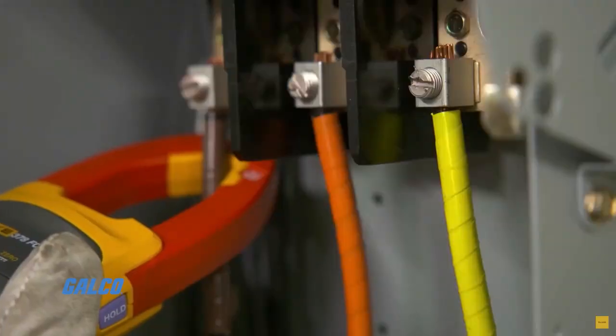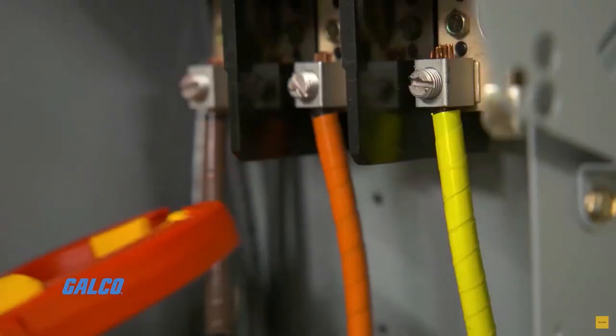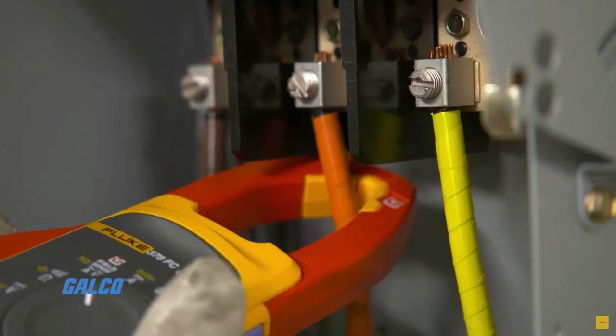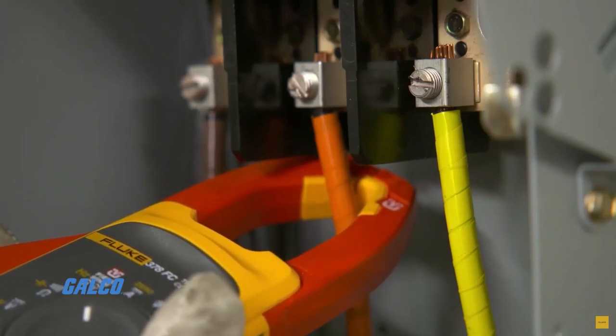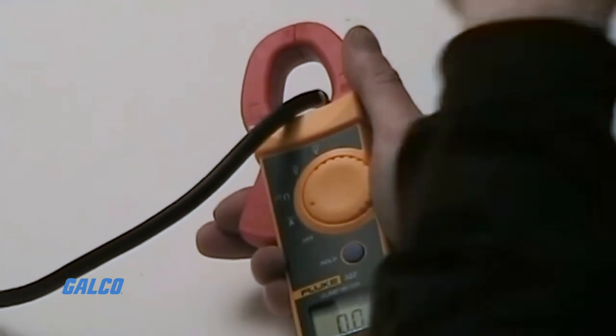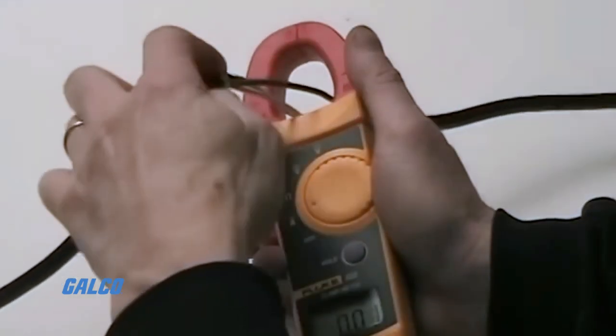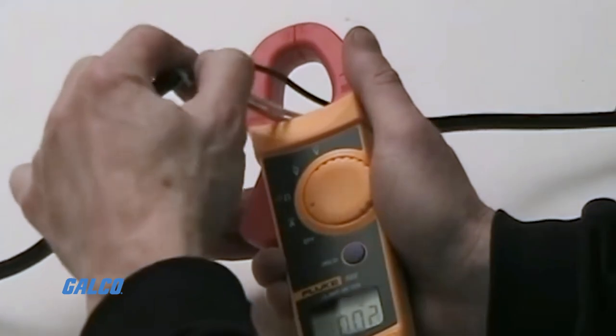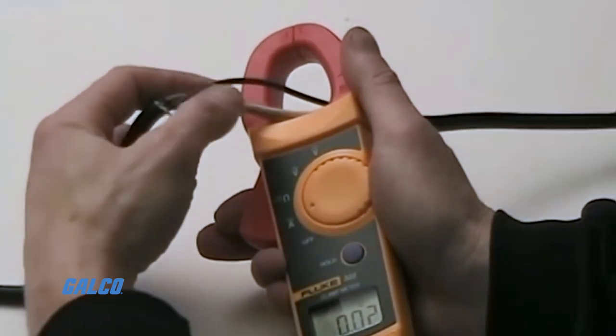It is also important to make sure that you are getting a proper reading from a singular wire so you can have the most accurate reading. For example, an extension cord has multiple wires, so if one wire is drawing 6 amps, another wire will be drawing an equal or opposite 6 amps.